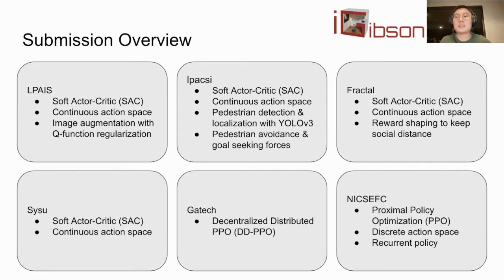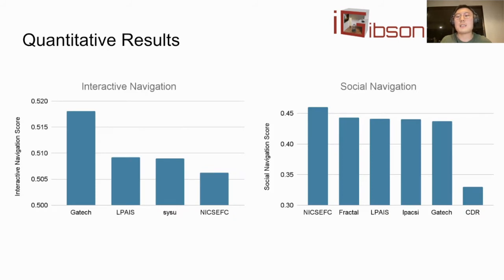Quite a few teams have very interesting algorithmic designs to improve or robustify their methods. For example, the LPAIS team uses extensive image augmentation on the RGB space while regularizing the Q function to have similar predictions. Another team uses explicit pedestrian detection and localization with YOLO v3 and a force model that learns to balance pedestrian avoidance and goal seeking. We are glad to see fierce competition among participants during the final test phase — the main metrics of the leading teams are only 2-3% apart from each other. Some teams are better in SPL or STL, while others perform better in effort efficiency or personal space compliance.